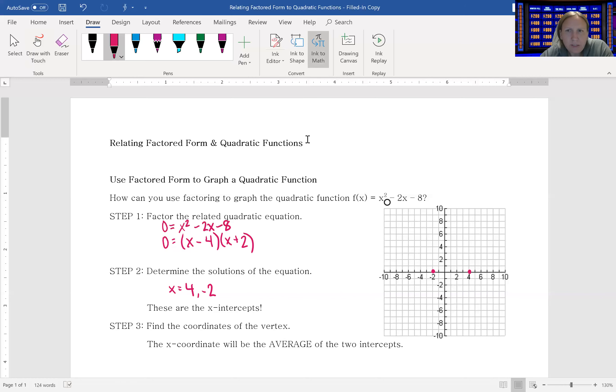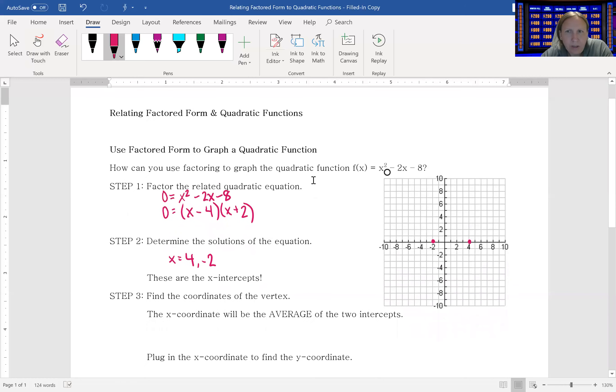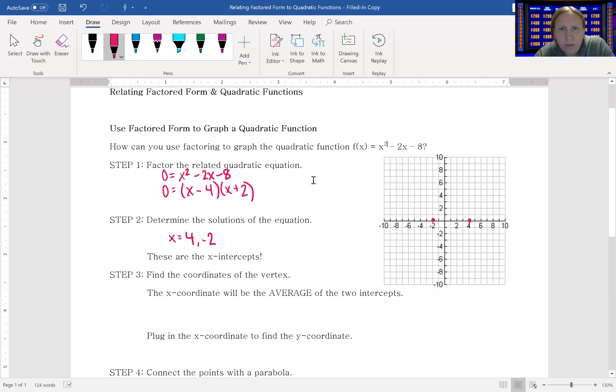Then let's find the coordinates of the vertex. Well, we know that these two x-intercepts are mirrored across from each other across that axis of symmetry. So this one's actually pretty easy to do. We can just kind of find that halfway point, so the halfway point would be at -1.